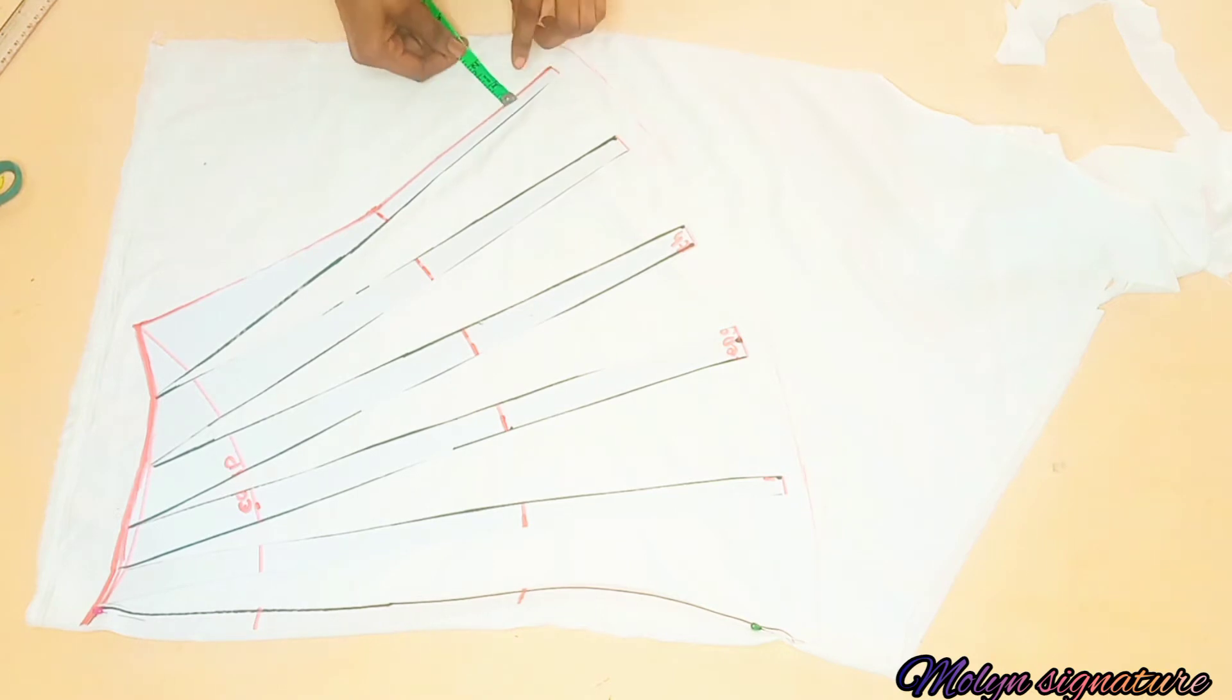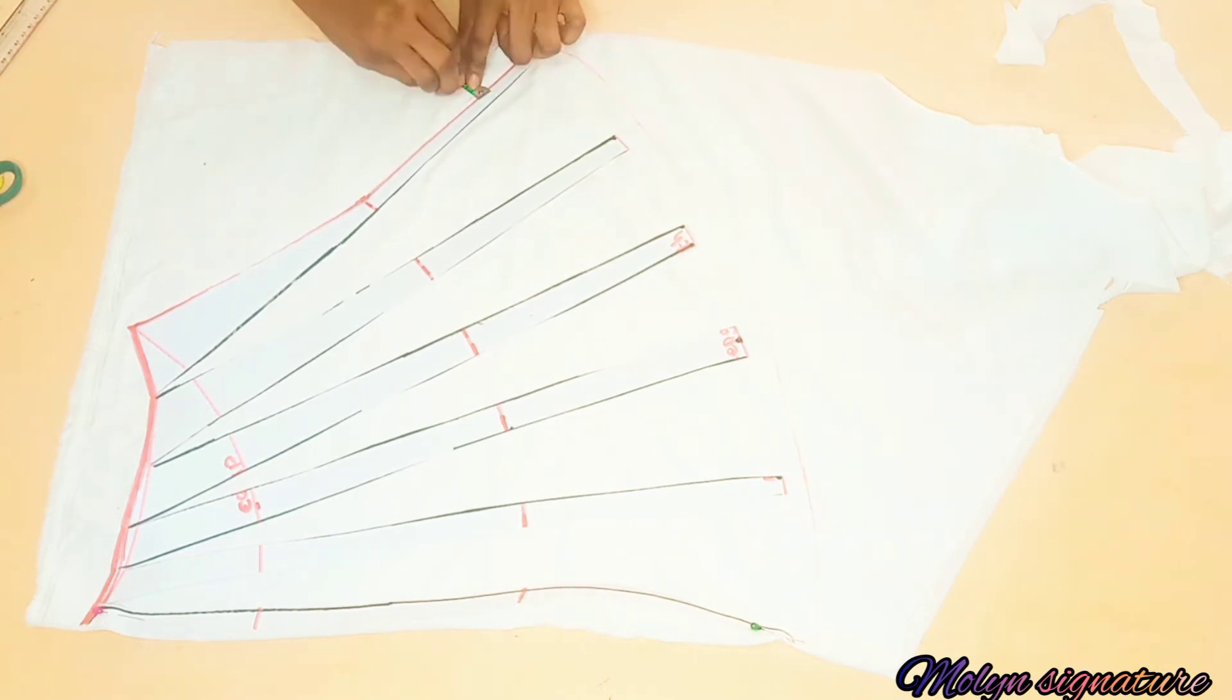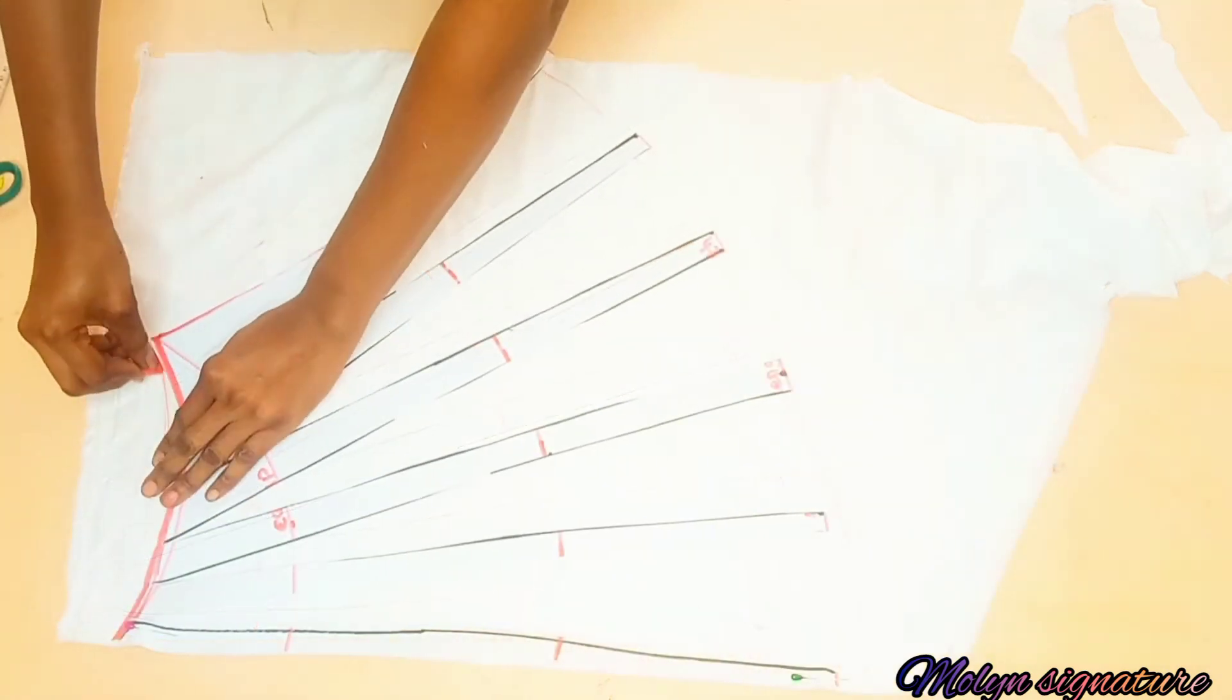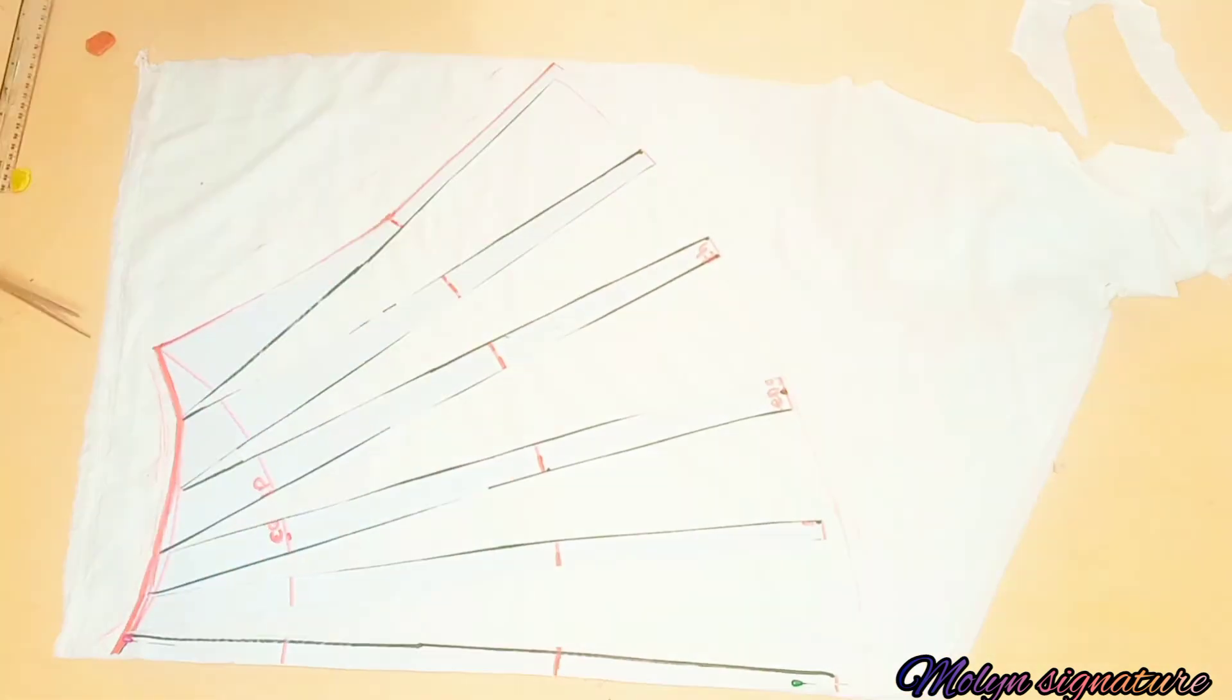And also I'm just going to be tracing the rest of the line, giving one inch sewing allowance. I really don't need the sewing allowance but I'm just going to add it for the purpose of it. And the next thing I did was to cut out with my scissors.